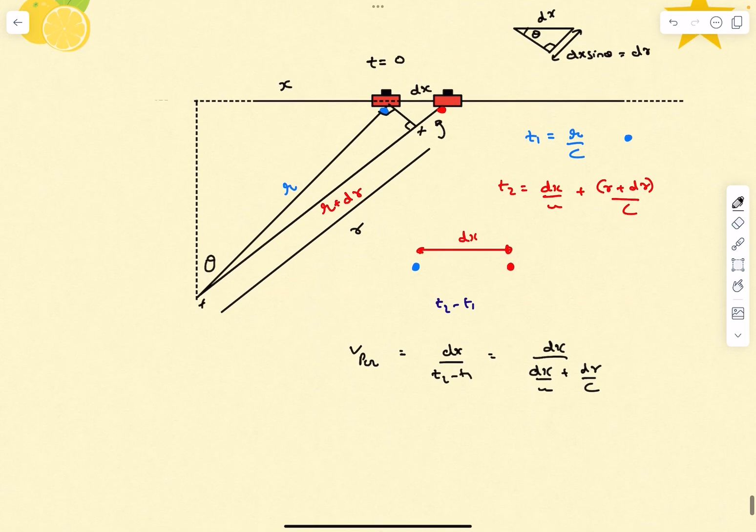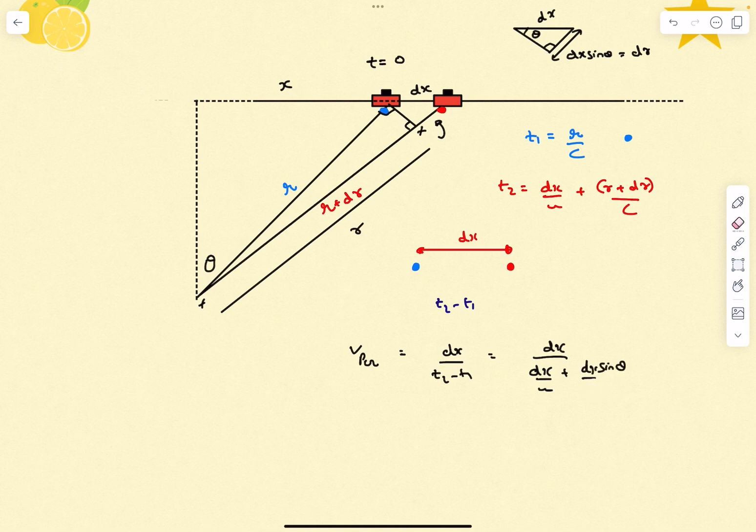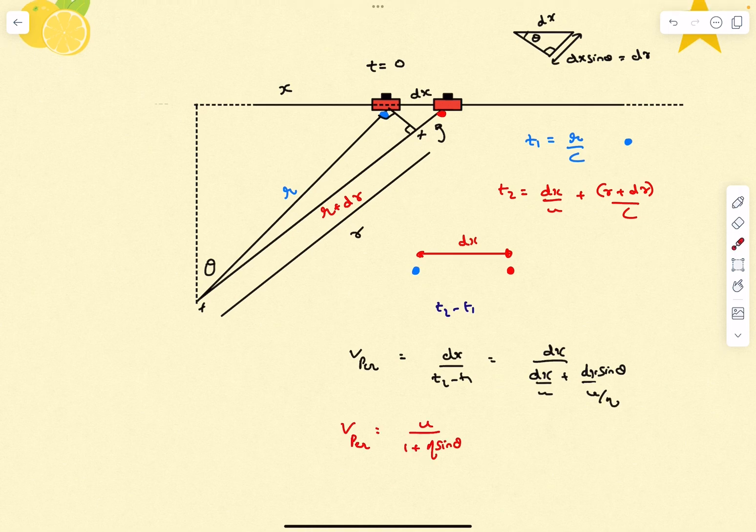So dr, which is basically this distance over here, is going to be dx sin θ. Now I can substitute dr as dx sin θ. I can write c as u/η. After solving we'll obtain the perceived velocity as u/(1 + η sin θ).